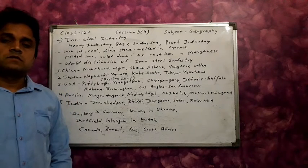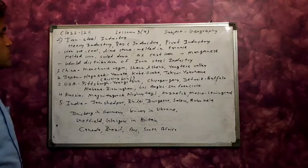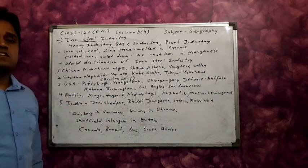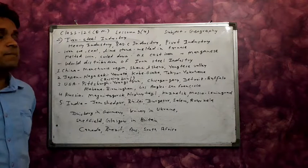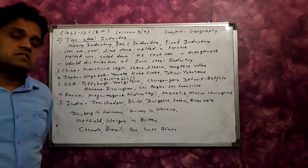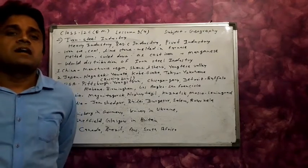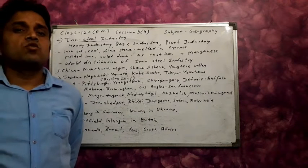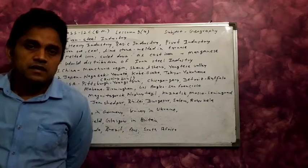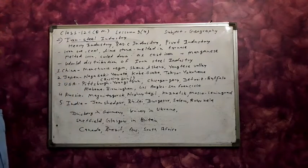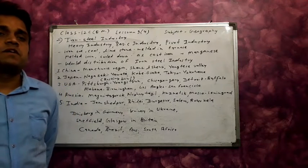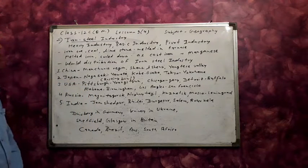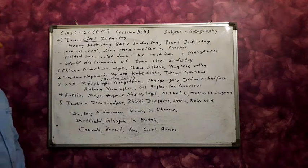Good morning students, today we will discuss the iron and steel industry. Iron and steel industry is called heavy industry, basic industry, and the pivot industry. Manufacturing industries were established in the late 18th century, when European countries started to develop and began inventions of machinery. Iron and steel industry was first established at a broad level during this period.